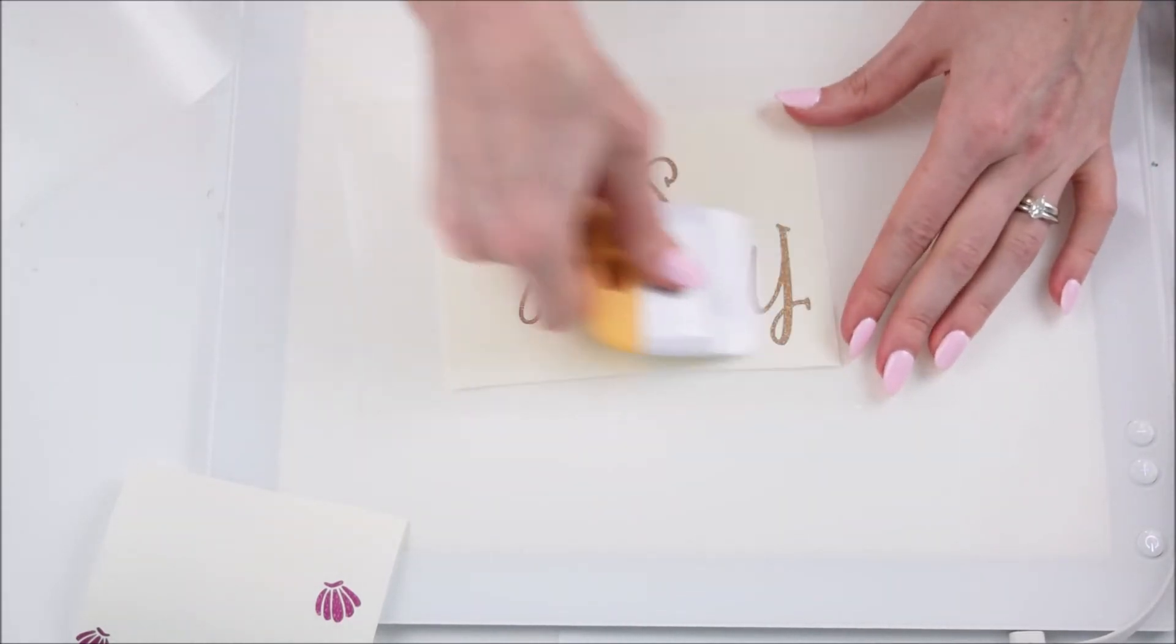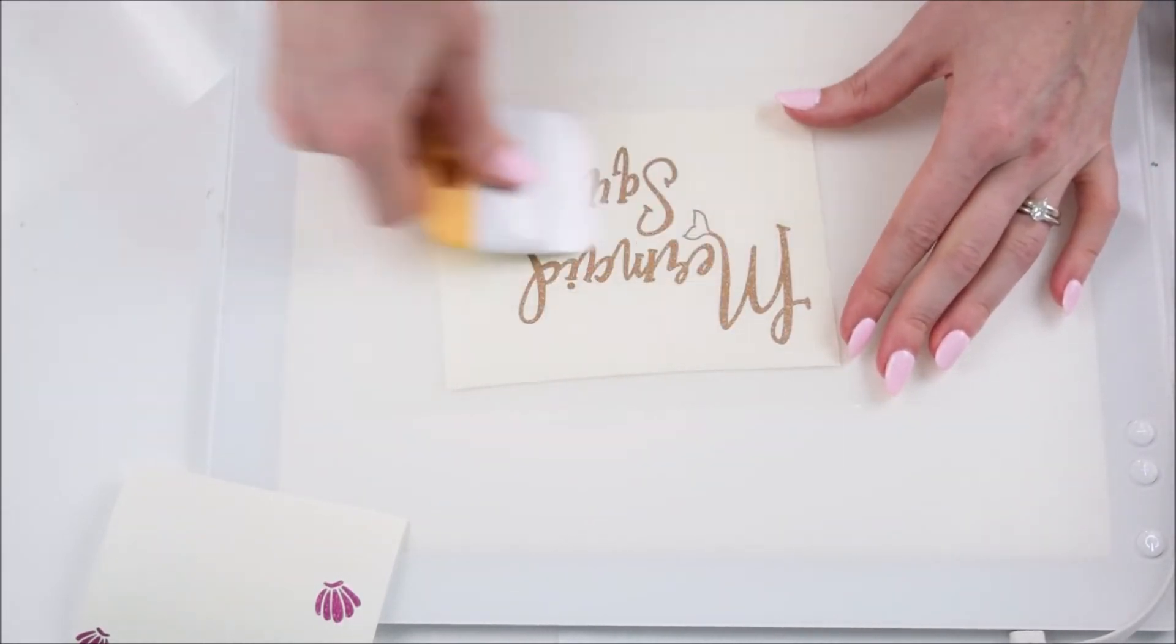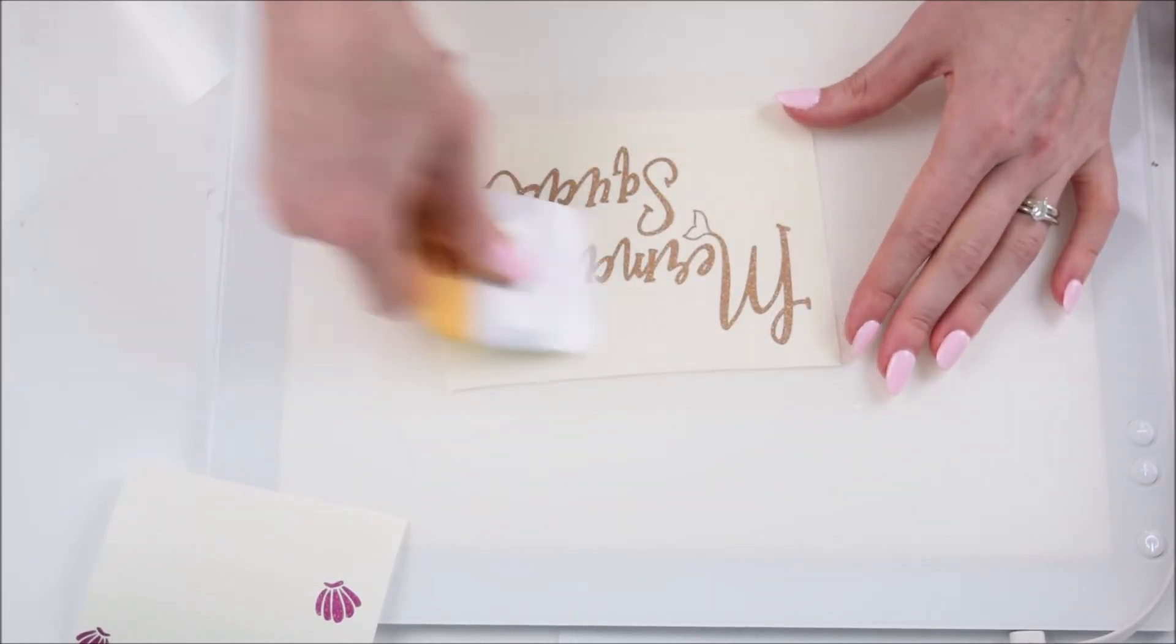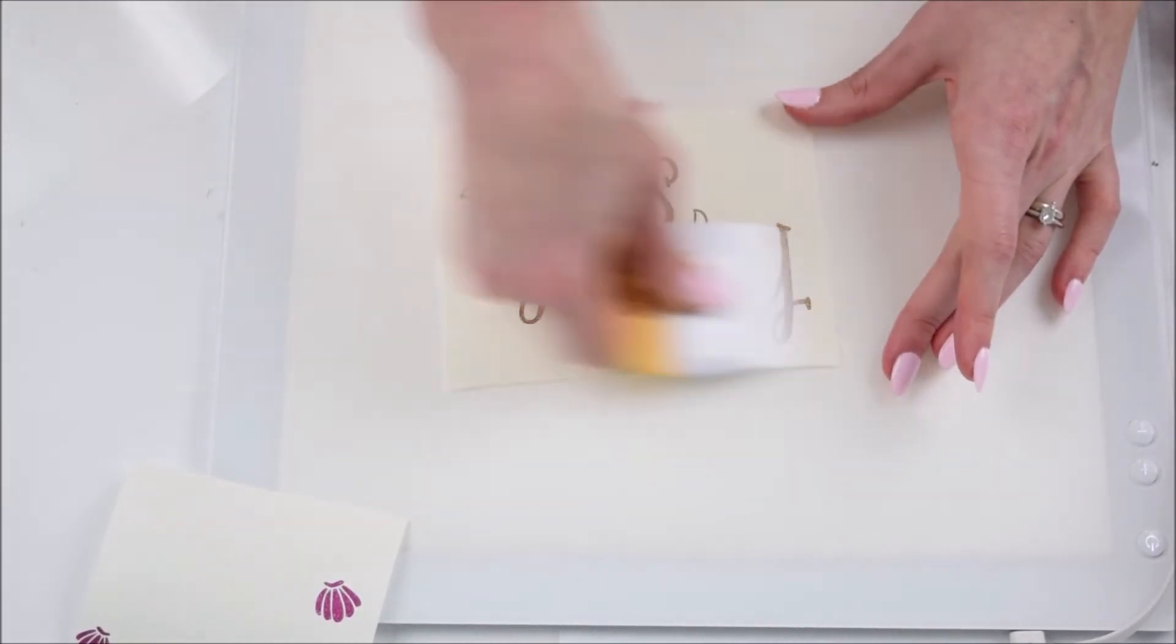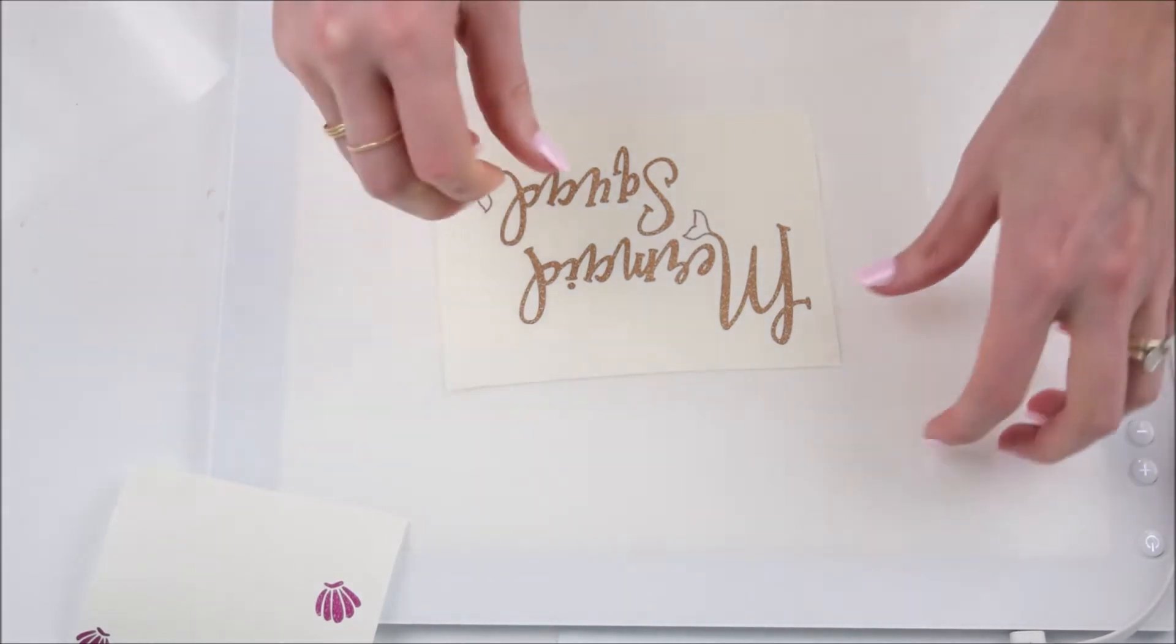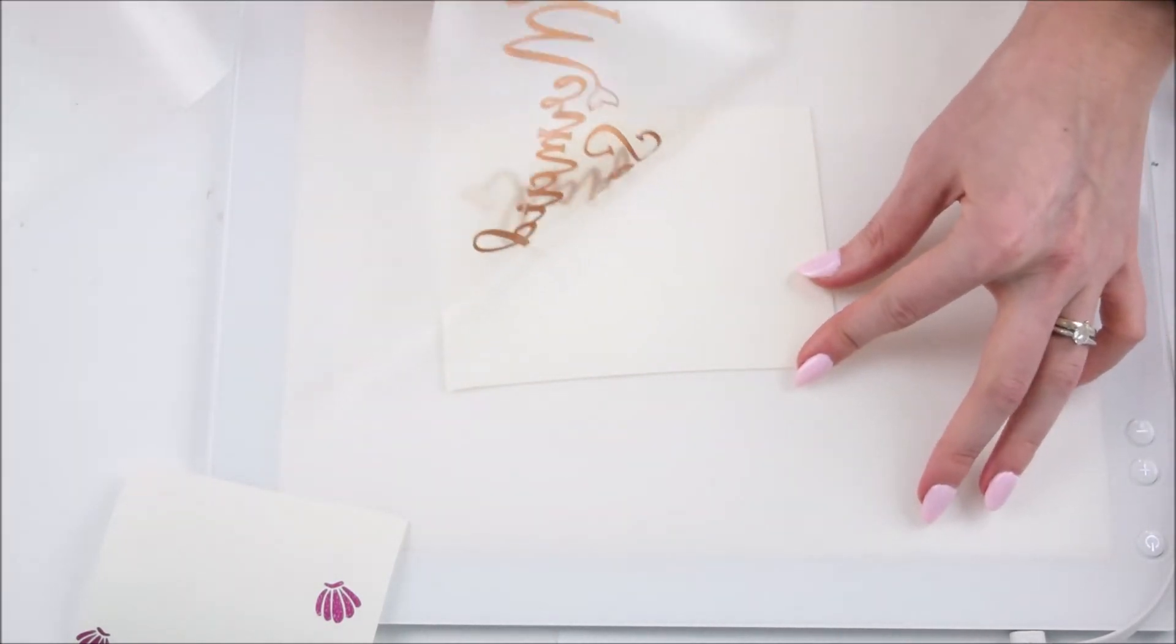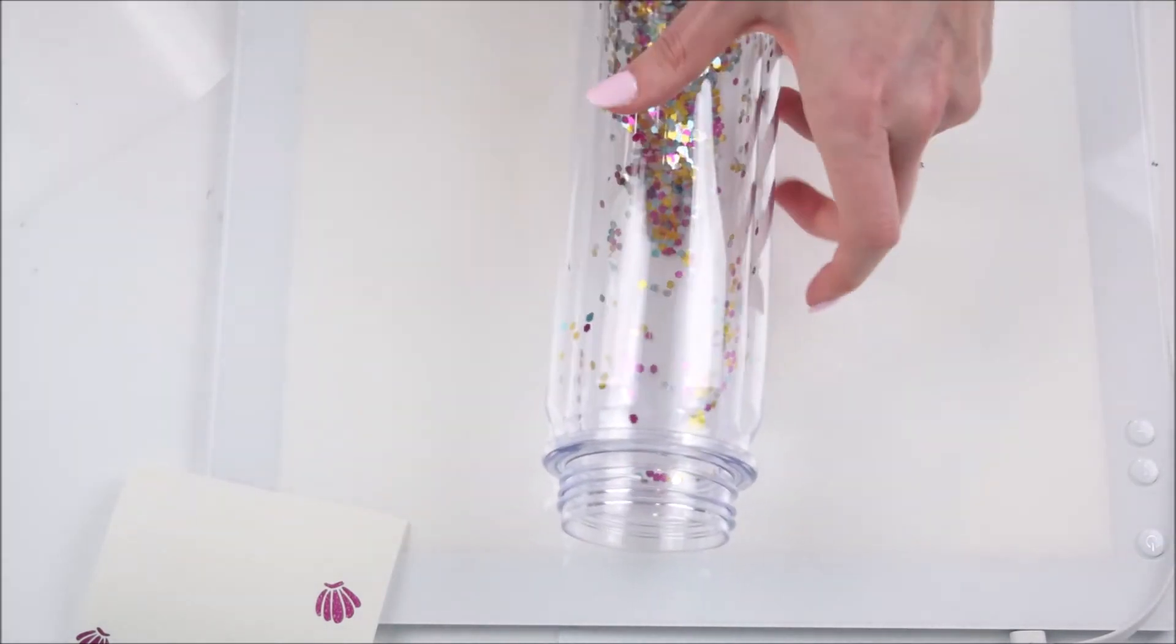Of course, you will place your transfer tape on top of your vinyl design. And then you'll want to burnish it with a scraper tool so that it's going to pick the design up. Carefully peel the design away and if anything's not sticking, make sure you lay it back down and burnish it again until it comes up.